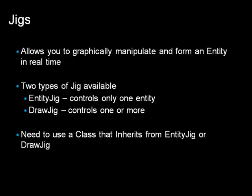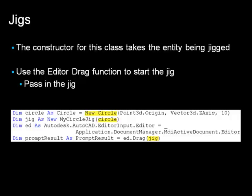To use a jig, you will need to create a class that inherits from EntityJig or DrawJig. We'll focus on EntityJig in this training. The constructor of the class that you derive from EntityJig will take an argument for the entity being jigged. In this example, we create a new circle and pass that circle into the constructor for a class named MyCircleJig, which was inherited from EntityJig. We then use the drag function of the editor and pass in our jig object.